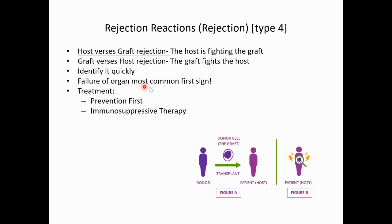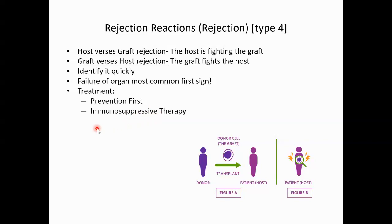We need to identify rejection quickly. Failure of the organ is the most common first sign. Treatment starts with prevention — rejection is always one step away, so patients must be compliant to prevent it. They require immunosuppressive therapy for the rest of their lives — their immune system is always suppressed so the organ won't cause rejection. These patients should avoid large crowds, wear masks during outbreaks, and stay away from people to prevent infection.